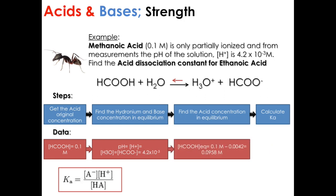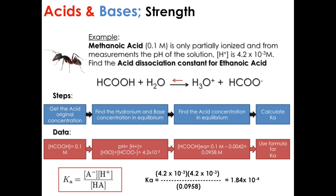Then, the acid concentration in equilibrium is the original minus one of the concentrations of the products. Finally, we calculate the Ka, and we get 1.84 times 10 to the negative 4, which is considered a weak acid.